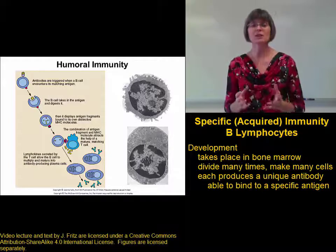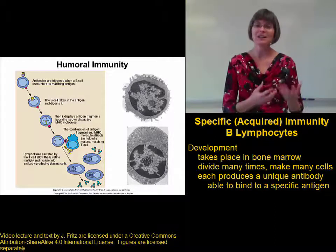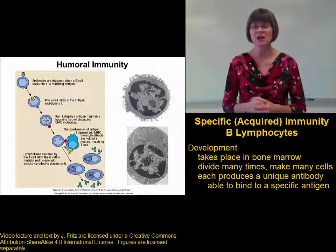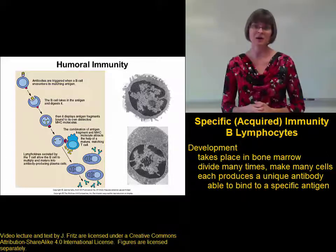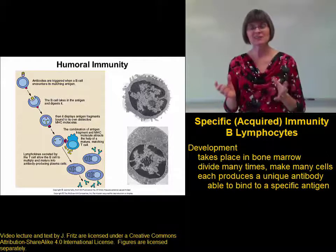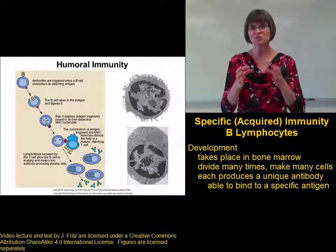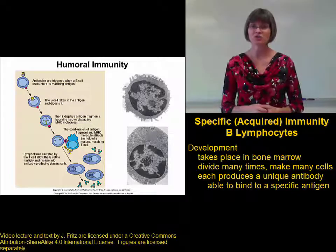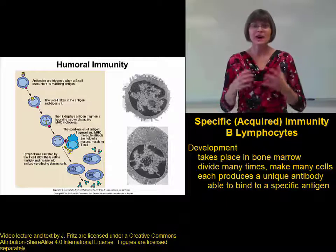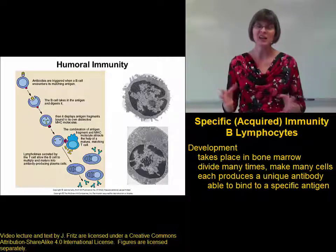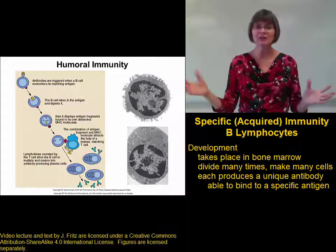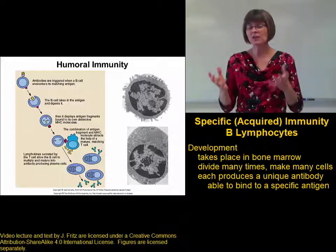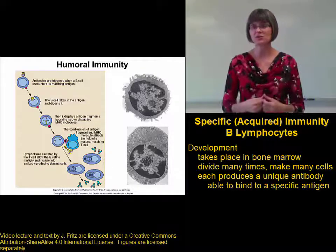This is really similar to the unique randomly generated receptors produced by the T cells. Only with B cells, they're antibodies. These antibodies have the ability to bind to specific antigens on a pathogen. Because the B cells make these randomly, we can make antibodies that have the ability to bind to any sort of antigen, which unfortunately includes self-antigens.